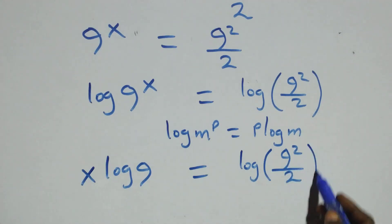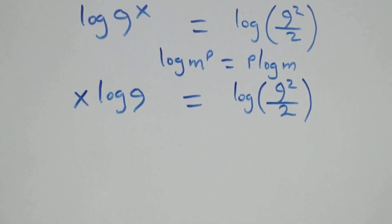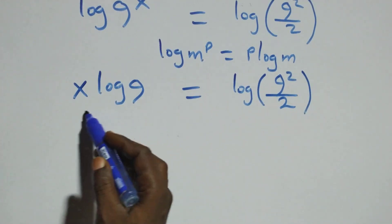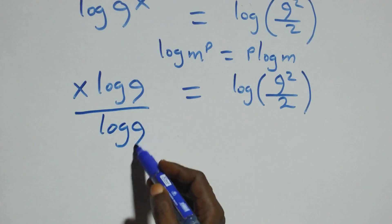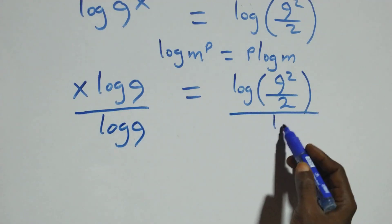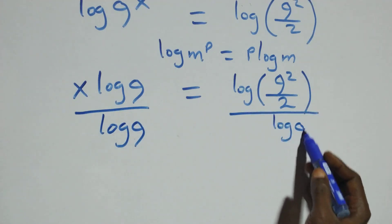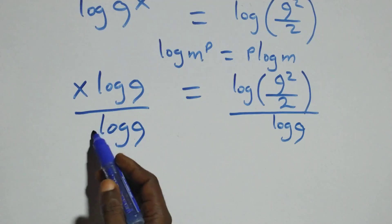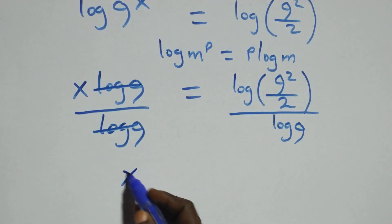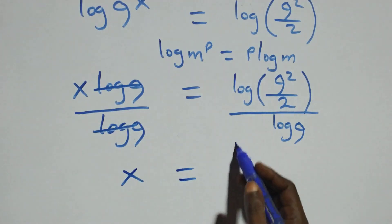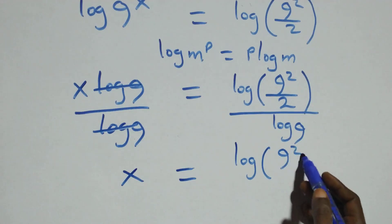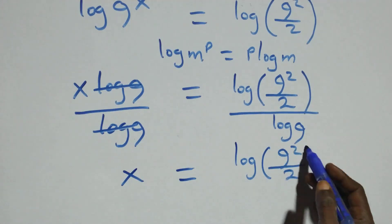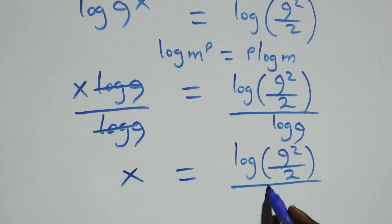In the next step we divide both sides by log 9: divide this side by log 9 and also divide this side by log 9. The log 9 terms cancel on the left, giving x equals log(9 squared over 2) divided by log 9.